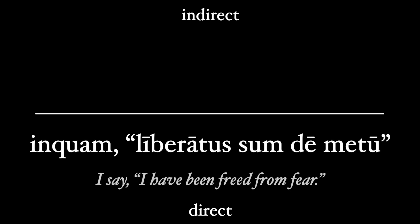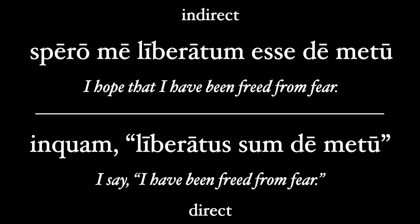For another example, the direct statement might be "Inquam liberatus sum de metu" — I say, "I have been freed from fear." To make this indirect with spero, "I hope," we express the subject as the accusative me and make the verb liberatus sum an infinitive. Note that liberatus changes to liberatum because the subject is now accusative: "Spero me liberatum esse de metu" — I hope that I have been freed from fear. This is actually Cicero's famous quote from the Tusculans.